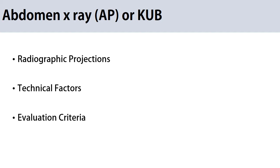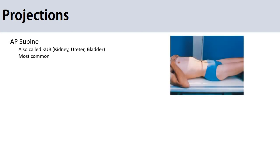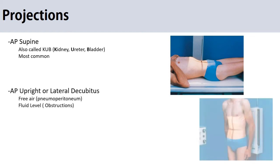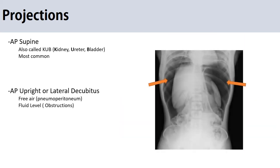Radiographic examinations of the abdomen may include one or more projections. The AP projections of the abdomen include AP supine, also called KUB — kidney, ureter, and bladder. Projections to complement the supine AP include an upright AP or an AP projection in lateral decubitus, usually left lateral. Both images are useful in assessing the abdomen for free air and to determine the presence of air-fluid levels.